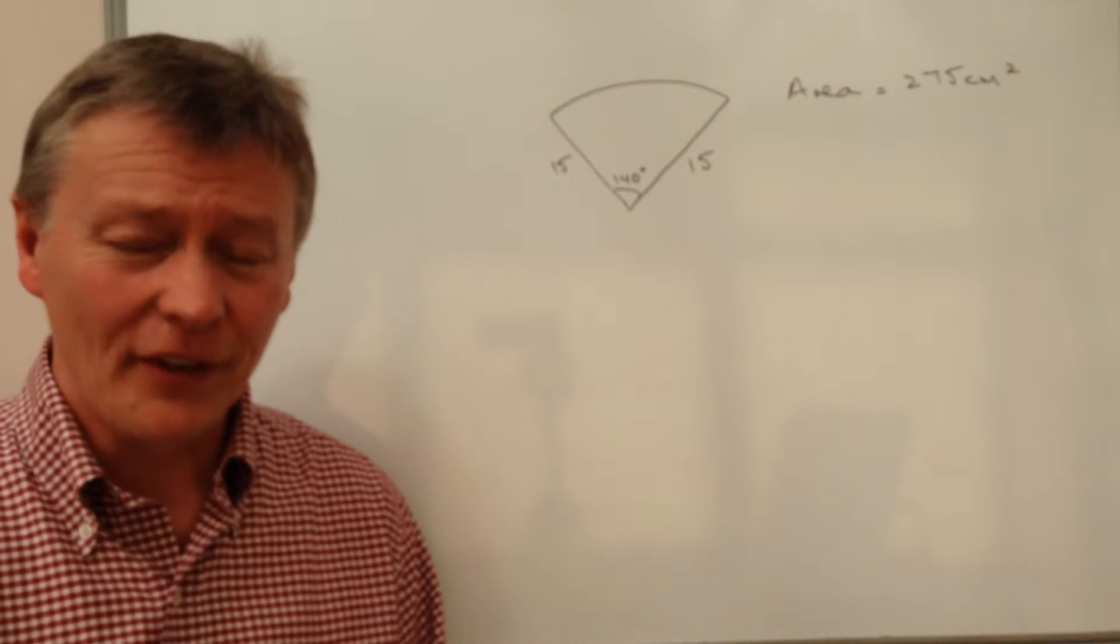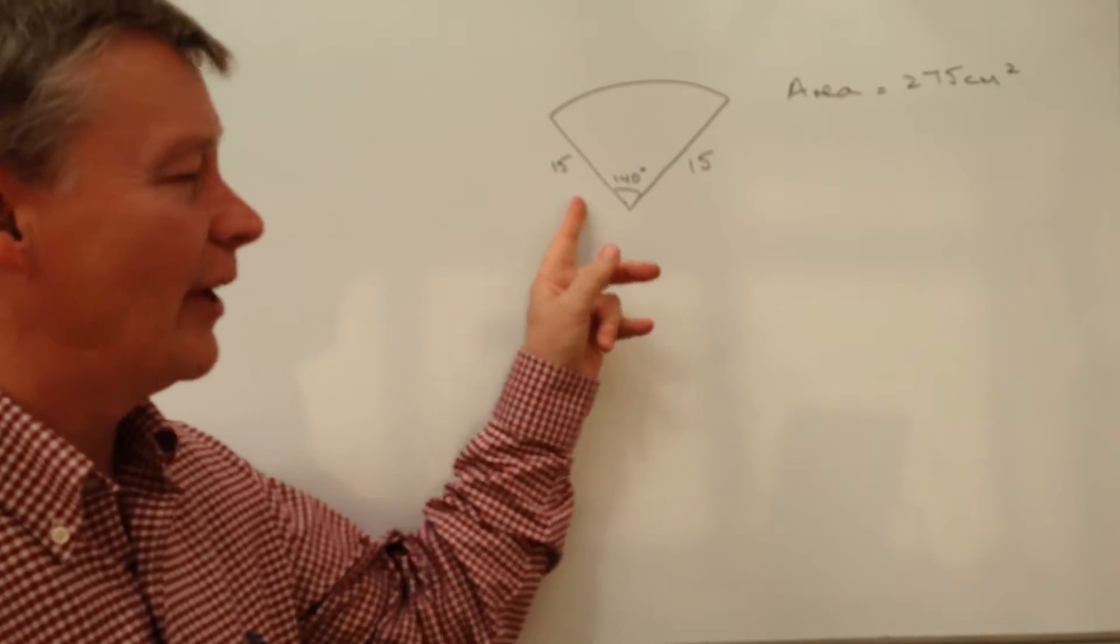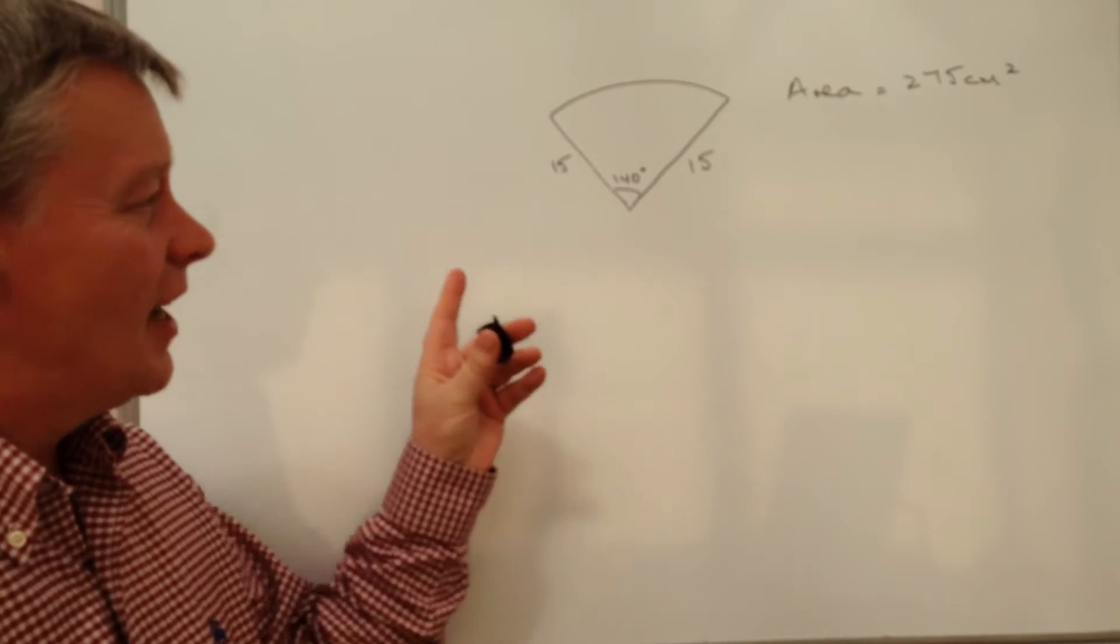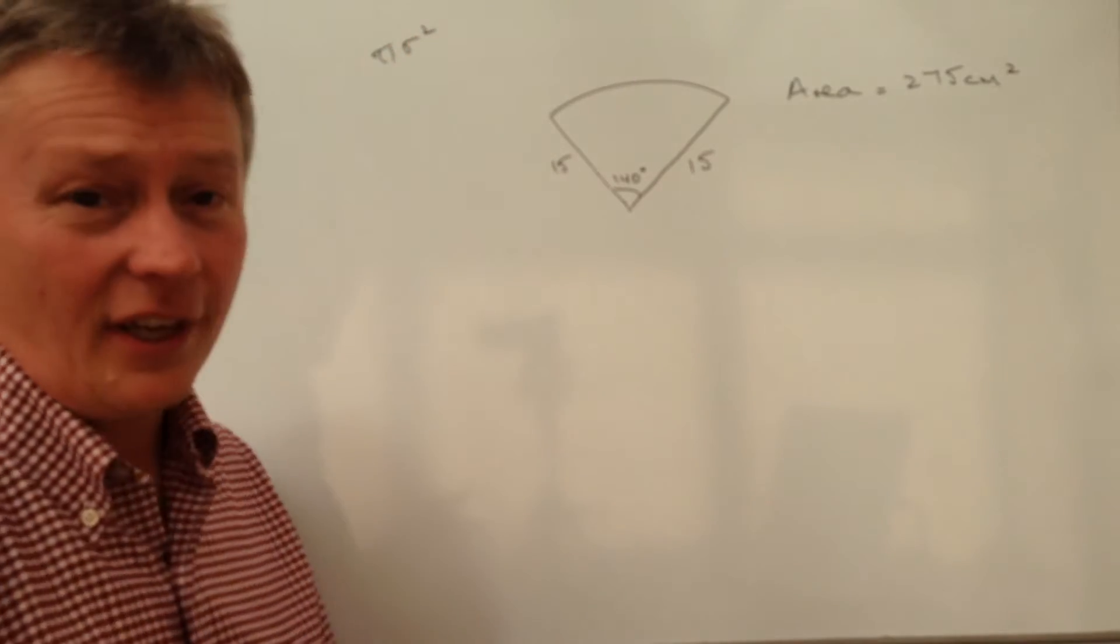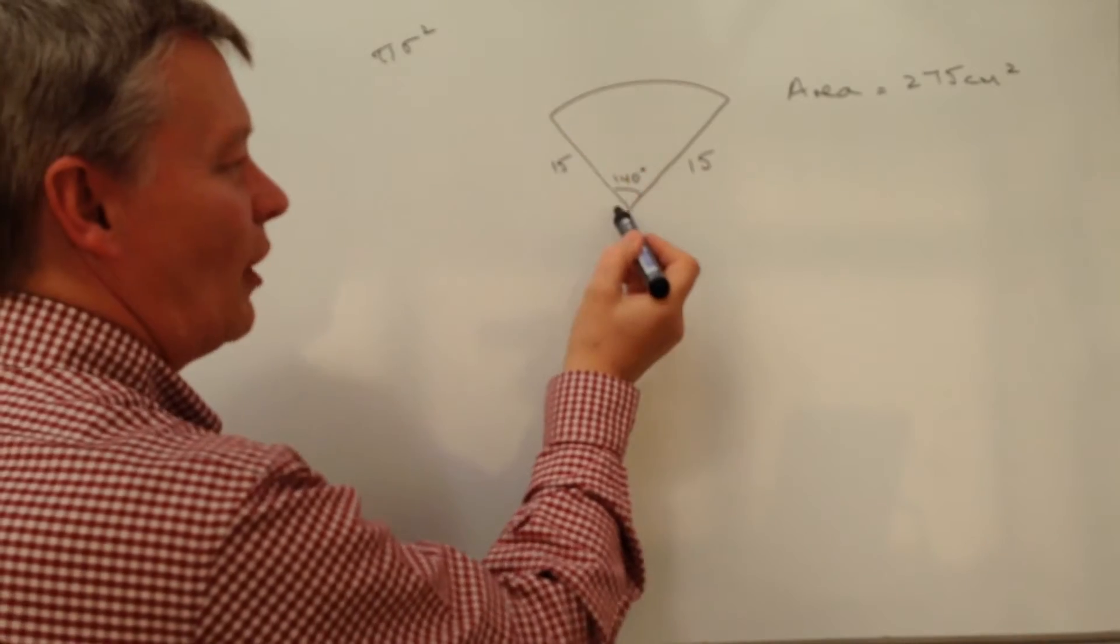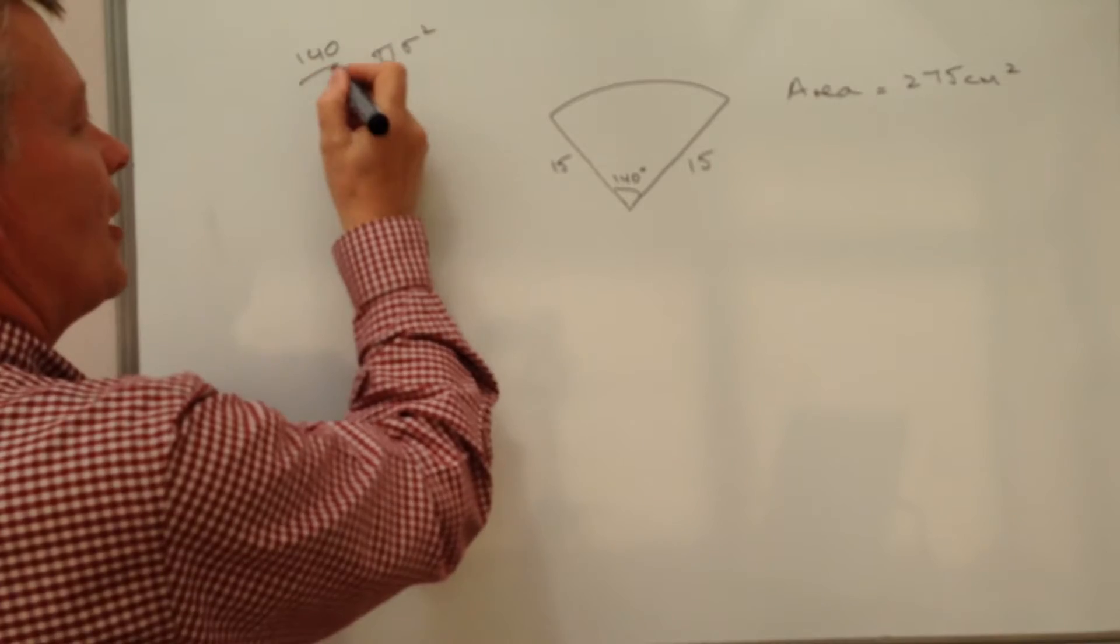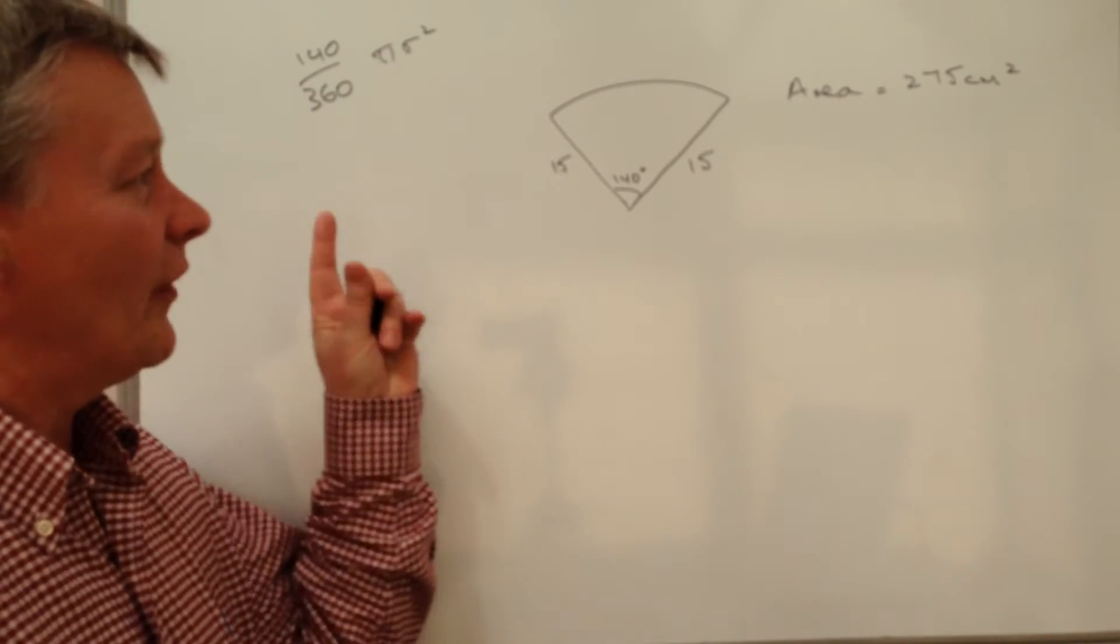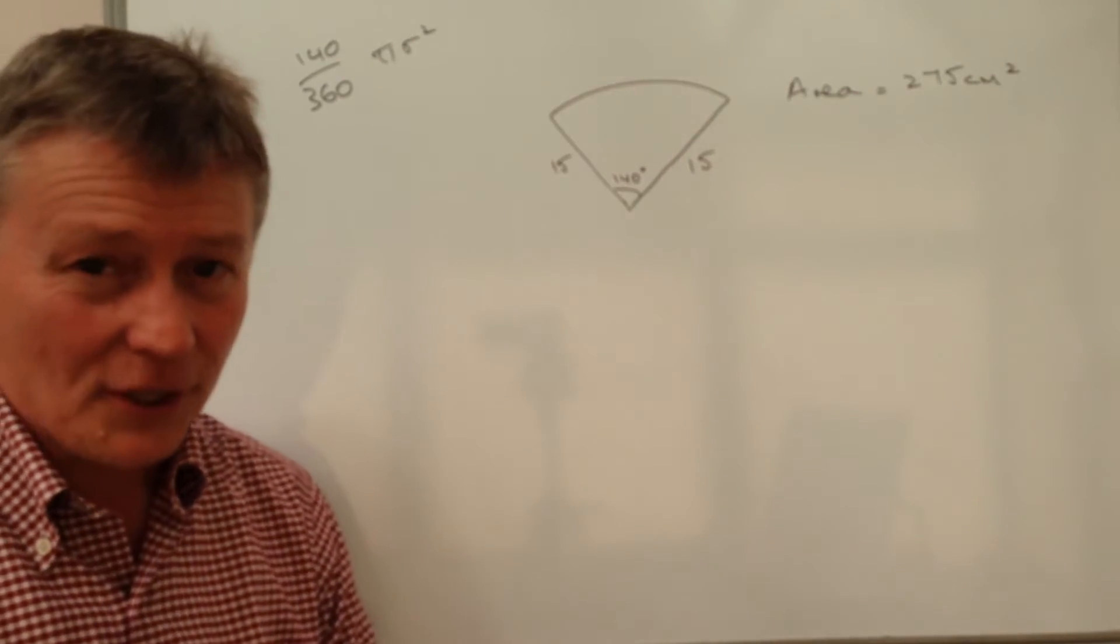Hi, in this particular video, this is the second part of a question where we worked out the area of the sector of a circle. What we said is we use the formula π r squared, which is the overall area of a circle, and then we multiply it by the fraction that we're actually using, which in this particular case is 140 over 360.